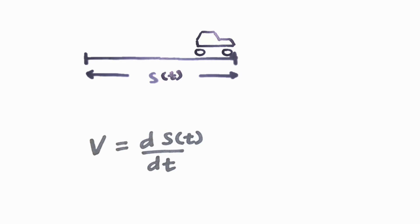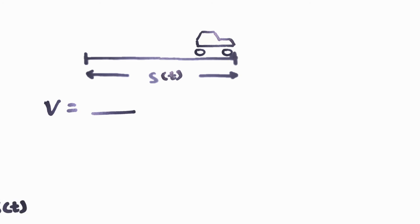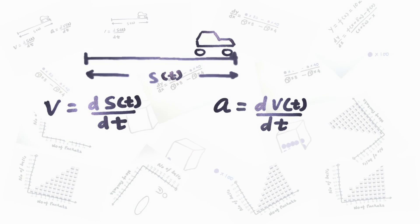Acceleration is also the rate of change of velocity with time. So, if velocity is a function of time, then the derivative of velocity with time is going to be the acceleration. And this is how we can use this mathematical tool in physics.